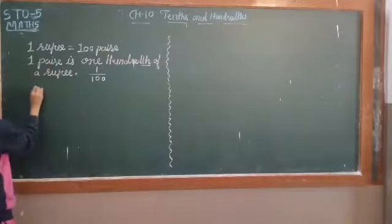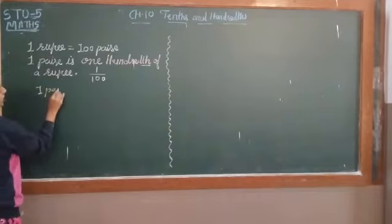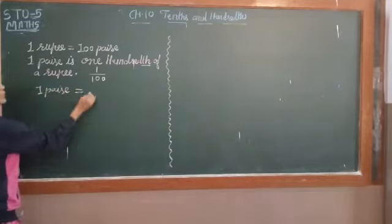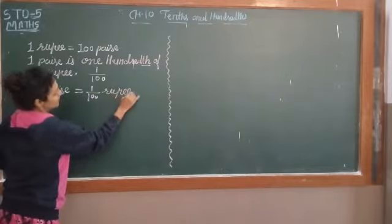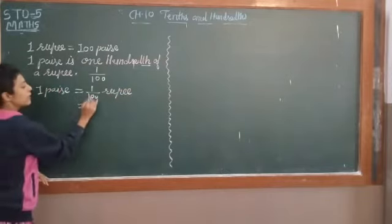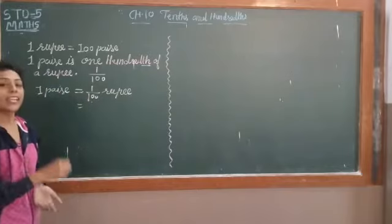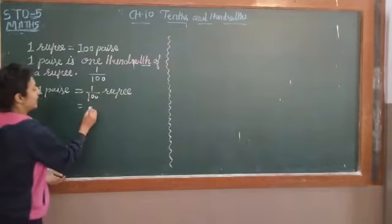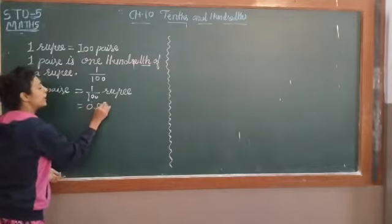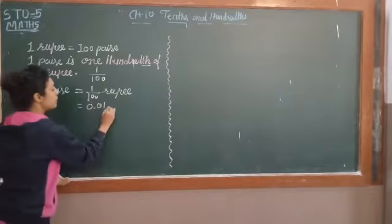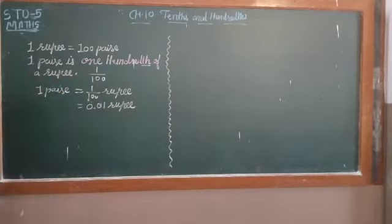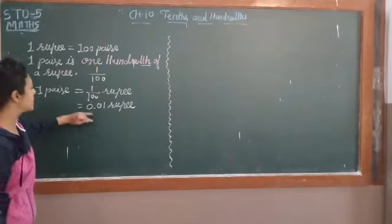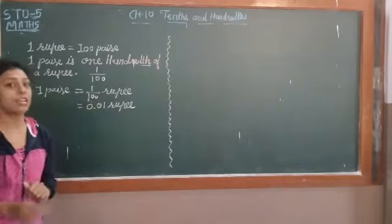So we can say 1 paise is equal to 1 upon 100 rupee. And 1 upon 100 in decimal form is 0.01 rupee. So 1 paise is equal to 0.01 rupee.